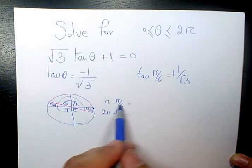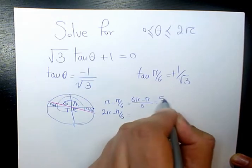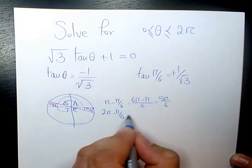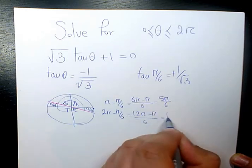When you do the common denominator, it's going to be (6π - π)/6, which will be 5π/6. The other one is going to be (12π - π)/6, which is 11π/6.